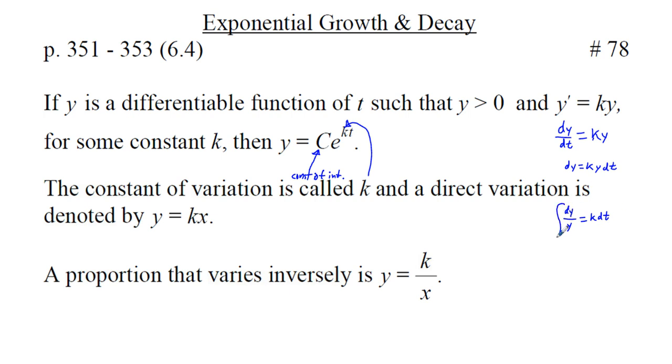Now, if we integrate both sides of this equation, the integral of dy over y is going to be the natural logarithm of the absolute value of y. And on the right side, we're going to have kt. And we're going to have plus c, our constant of integration. That's where this big C comes from eventually.